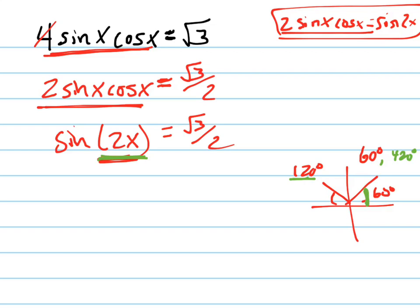Not only is the sine of 120 root 3 over 2, but the sine of 480 is root 3 over 2. And you could keep going around and around. There's an infinite number of angles that have the sine of root 3 over 2.